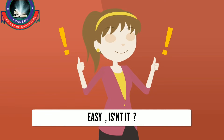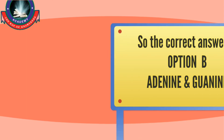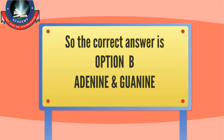So the answer is Option B, which says adenine and guanine. The purines found in both DNA and RNA are adenine and guanine — Option B. This was an easy one. Let's see what we have next.